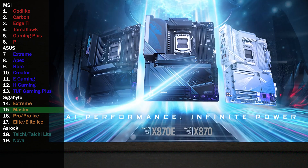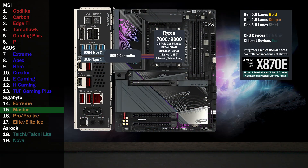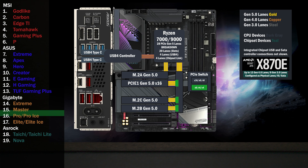Here's the Gigabyte AORUS X870E Master. The first four lanes go to the USB 4 controller, connecting two Type-C ports on the back. Four lanes at Gen 5 go to the main M.2. 16 Gen 5 lanes go to a PCIe switch connecting a x16 slot and two M.2 slots. If only the x16 is used, all lanes go to that slot. If one of the M.2 slots is used, the x16 drops to eight lanes and four lanes go to each of the M.2 slots.